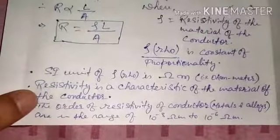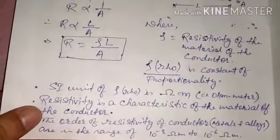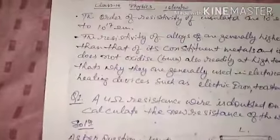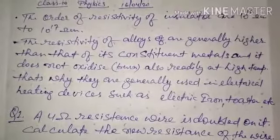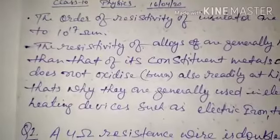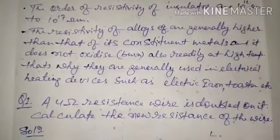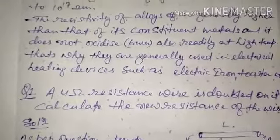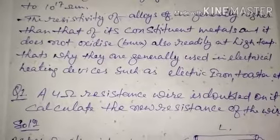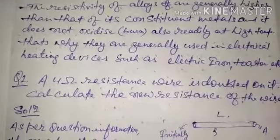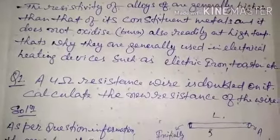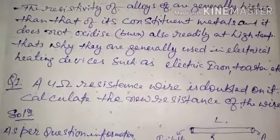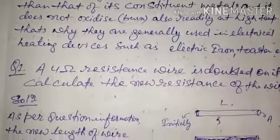Another point regarding resistivity: the order of resistivity of insulators is from 10¹² ohm-meter to 10¹⁷ ohm-meter, which is a very high range. So the resistivity of insulators is very high. Also, the resistivity of alloys is generally higher than that of their constituent metals, and alloys do not oxidize or burn at high temperatures.